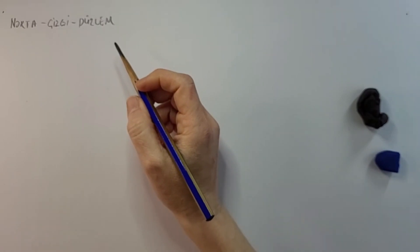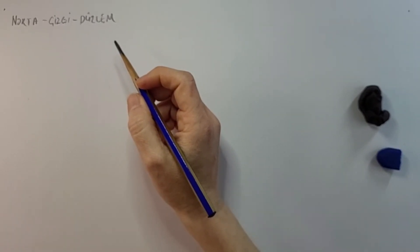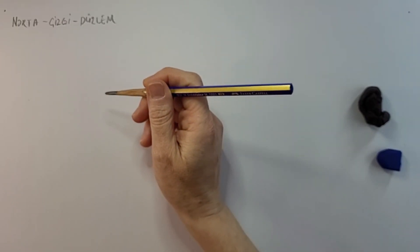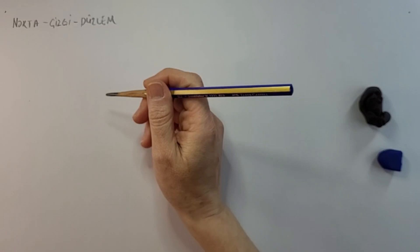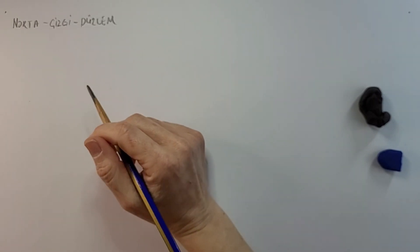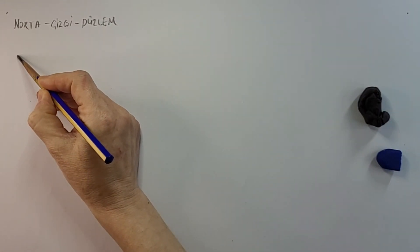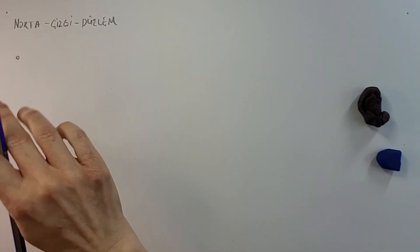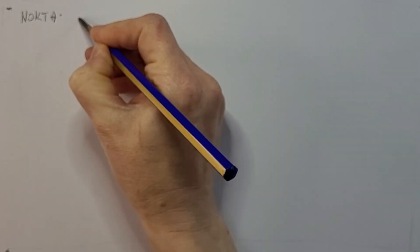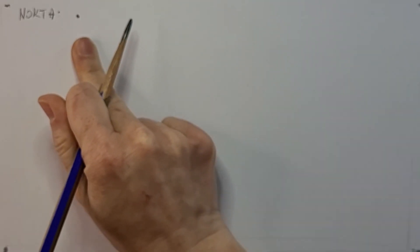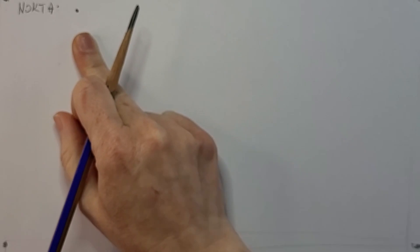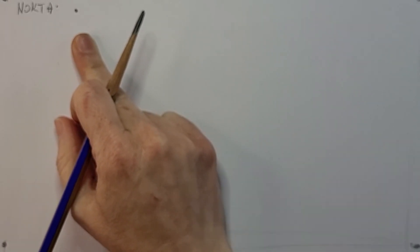Herkese tekrar merhaba, bu üçüncü dersimiz ve üçüncü dersimizde artık prizmalar konusuna geleceğiz. Prizmaları girmeden önce nokta, çizgi, düzlem konusunda ilgili kısa bir giriş yapmak istiyorum. Bu bölüm epey önemli. Öncelikle noktadan başlayalım. Nokta, kağıt yüzeyin üzerindeki en küçük işe biz nokta diyoruz.